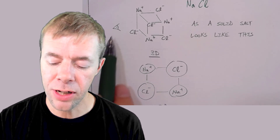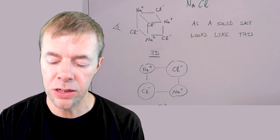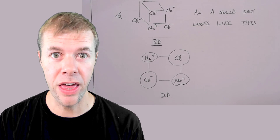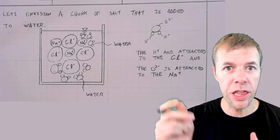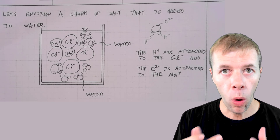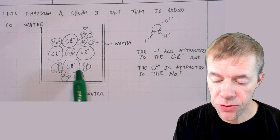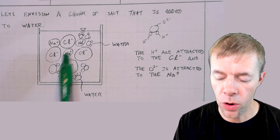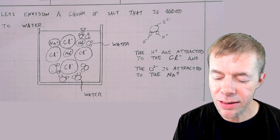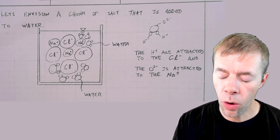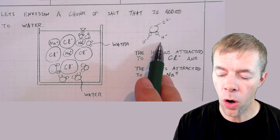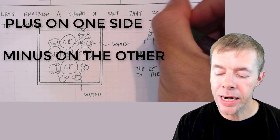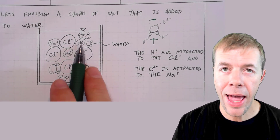Now if we take our eye and look at the salt, instead of looking at it in 3D, if we just look at it in 2D, we would see our sodiums and our chlorides alternating — it looks something like this. Now if we take our salt and throw it in some water, this is what it looks like. This is the container, all filled with water. This is the salt: there's the sodium, there's the chlorides. And these little Mickey Mouse-looking things are the water molecules — H-plus on one side, O on the other. Plus on one side, minus on the other.